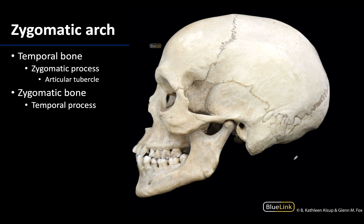Let's focus on the zygomatic arch, which extends from about here to about here and is composed of the temporal process of the zygomatic bone and the zygomatic process of the temporal bone, which is considerably larger. You can see where they are separated by the suture. The articular tubercle is this inferior projection of the zygomatic arch and forms the anterior limit of the mandibular fossa — essentially the anterior limit of the TMJ. In anterior dislocations, the mandibular condyle will actually move anterior to this articular tubercle.